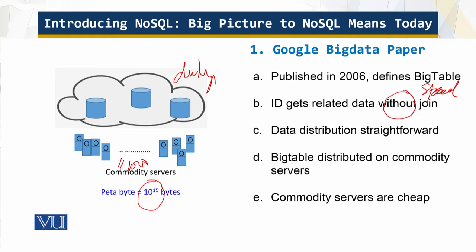Without a join, we get speed. This model also means that distributing data is more straightforward than with relational databases — by using simple keys, related data such as all pages on the same website can be grouped, as in the Google example. BigTable is designed to be distributed on commodity servers — a common theme for NoSQL databases — for example, Dell or HP servers with perhaps two CPUs, 8 to 16 cores, and 32 to 96 GB of RAM. Nothing fancy, just lots of them.